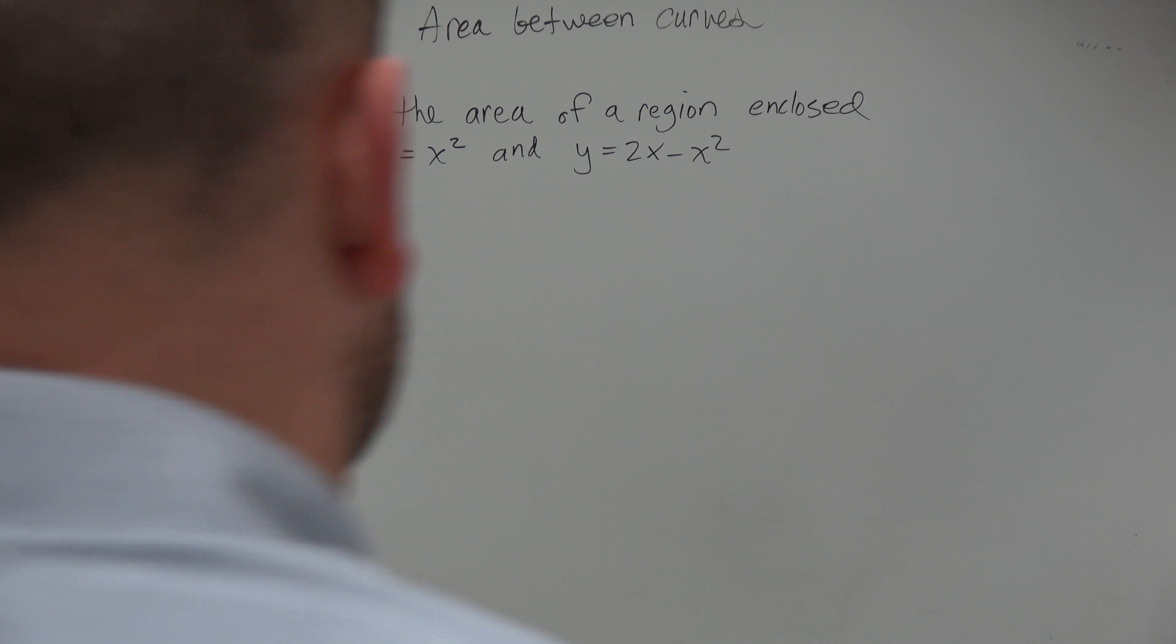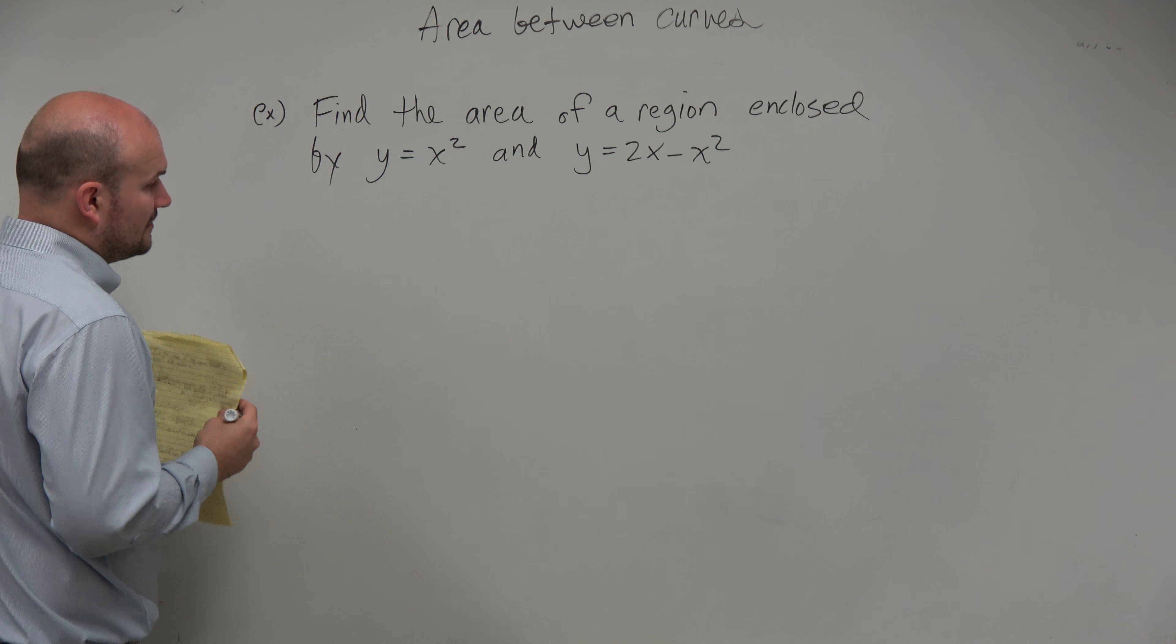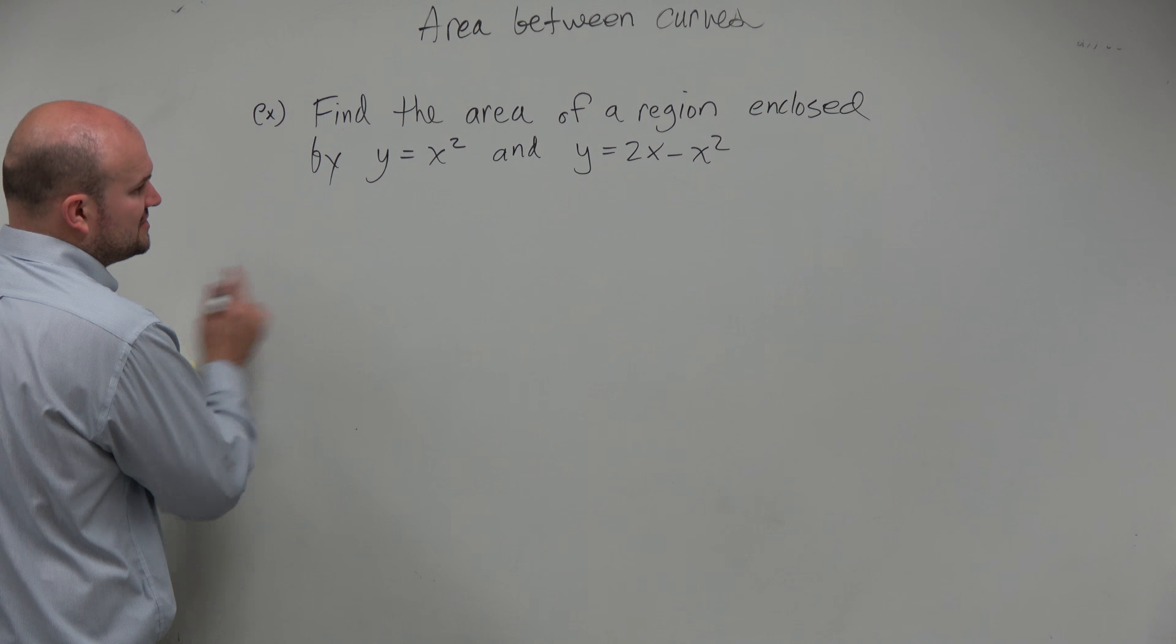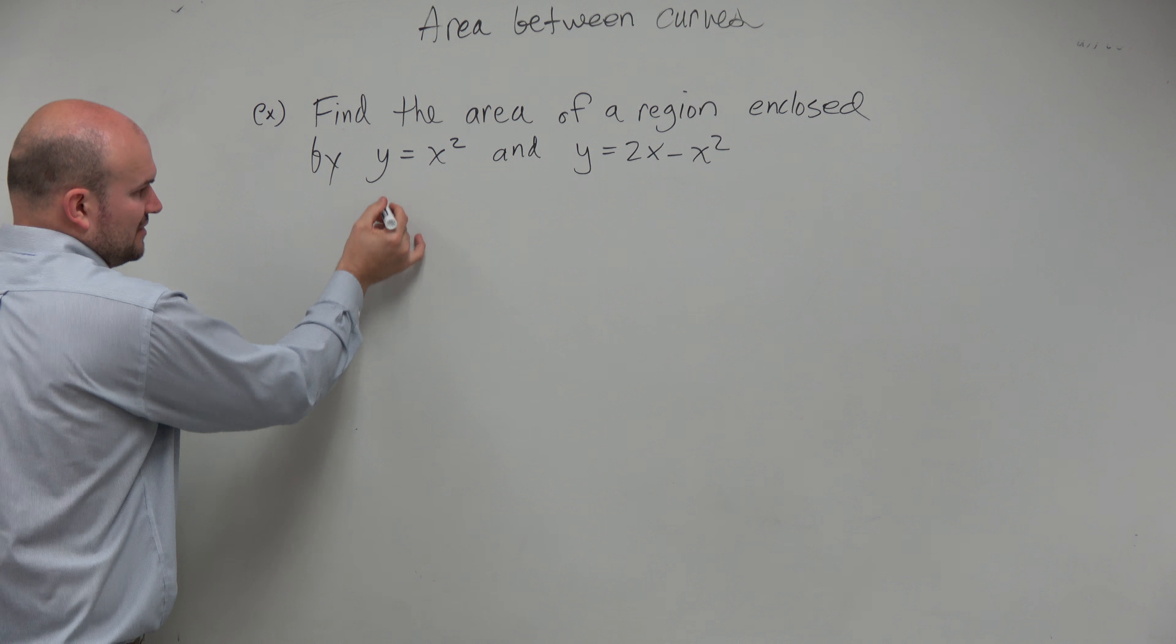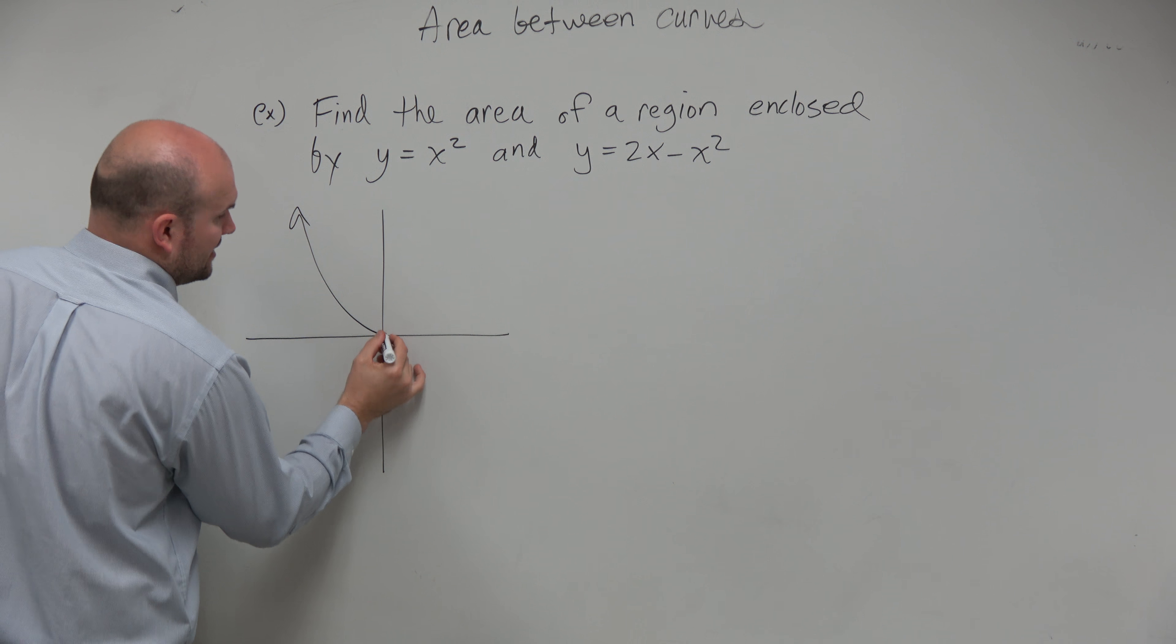In this problem, you need to know exactly what the graph looks like, but there are a couple things that we could do here. So first of all, let's go ahead and graph x squared. That's the parent function, so that's not bad. Looks something like that.